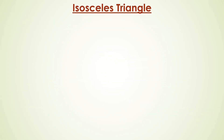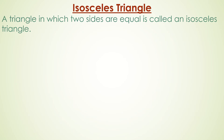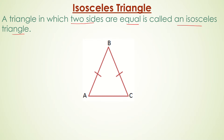Let us see what is the isosceles triangle. A triangle in which any two sides are equal is called an isosceles triangle. In this figure, in triangle ABC, side AB is equal to side BC. So, triangle ABC is called an isosceles triangle.